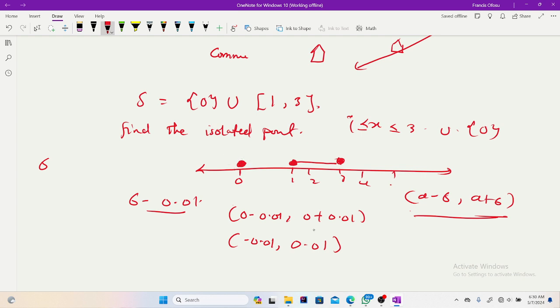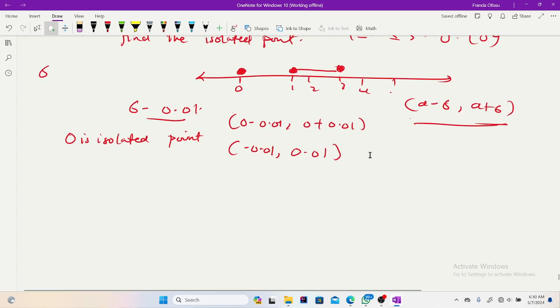For this 0 to be isolated, it means that within this interval, I shouldn't find any other element within this interval. So from 1 to 3, I can never find any of these members here, because from negative 0.01 to 0.01 it doesn't even include 1. So meaning that 0 is indeed isolated. So 0 is an isolated point.